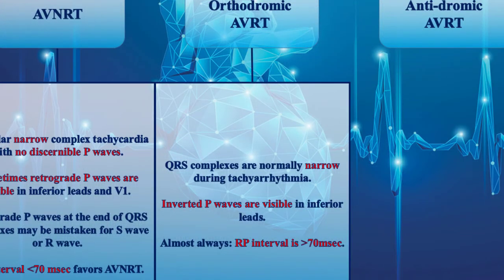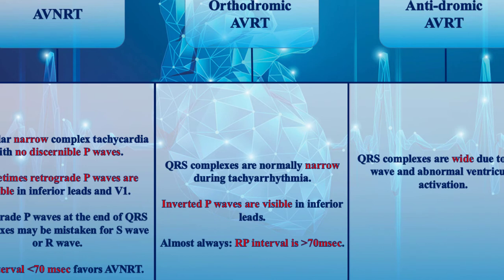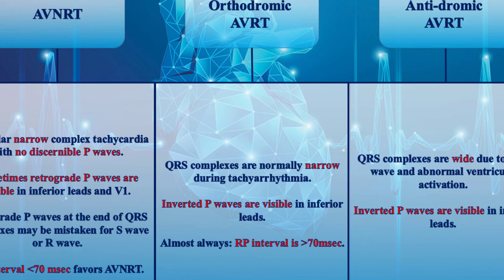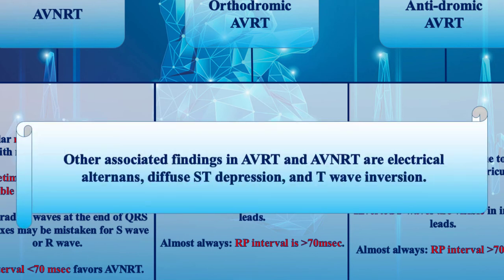In antidromic AVRT, the electrical impulse circulates in a counterclockwise direction. Since the electrical impulses reach the ventricles through the accessory pathway, QRS complexes are wide due to the delta wave and abnormal ventricular activation. So antidromic AVRT is a kind of regular supraventricular tachycardia with wide QRS complexes. Like orthodromic AVRT, inverted P-waves are visible in one or several leads due to retrograde depolarization of the atria, and the RP interval is almost always greater than 70 milliseconds. Other associated findings in AVRT and AVNRT include electrical alternans, diffuse ST-depression, and T-wave inversion.